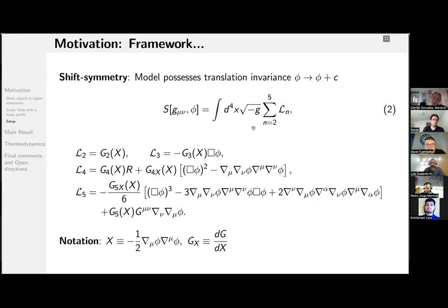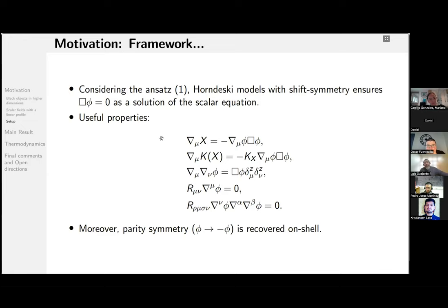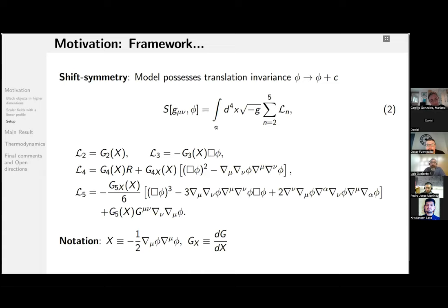And this is the most general Lagrangian with second-order dynamics. It has four independent functions labeled G₂, L₃, L₄, and G₅. Again, the notation X is the kinetic term. Why do we cover the shift symmetric sector? It is mainly because of the ansatz, because Horndeski models with shift symmetry for the ansatz ensure that the massless Klein-Gordon equation is always a solution for the full scalar equation for any functions G₂, L₃, L₄, L₅.